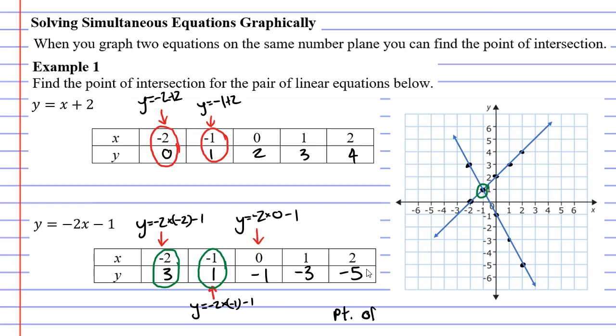Point of intersection is bracket, an x value of negative one and a y value of one. That's what we're looking for. That's solved.